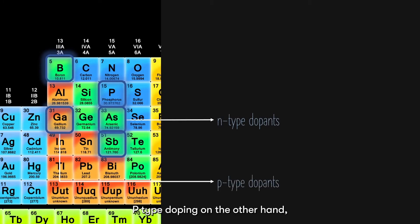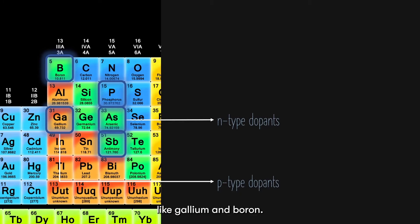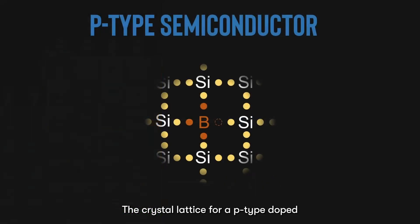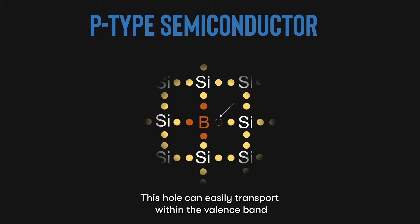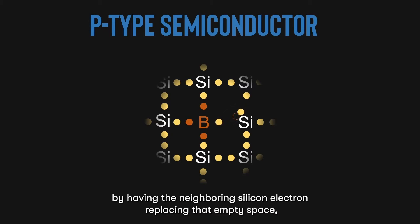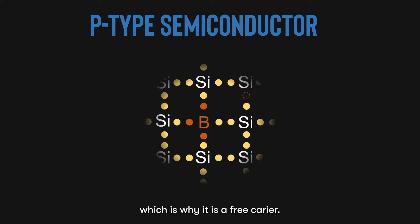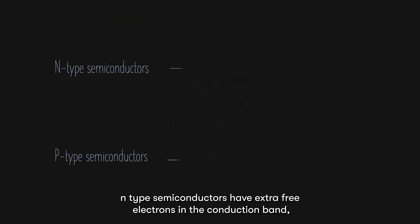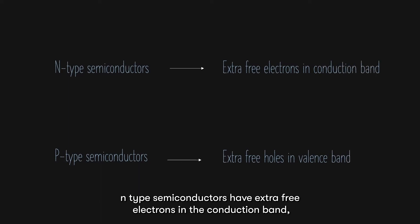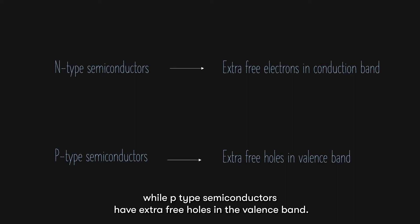P-type doping, on the other hand, is performed by using elements from group 13, which has only three valence electrons, like gallium and boron. The crystal lattice for a p-type doped semiconductor using boron looks something like this. Due to the empty space created by doping, we create a hole in the valence band. This hole can easily transport within the valence band by having the neighboring silicon electron replacing that empty space, which is why it is a free carrier. The more concentration of boron added, the more free carrier holes are generated.